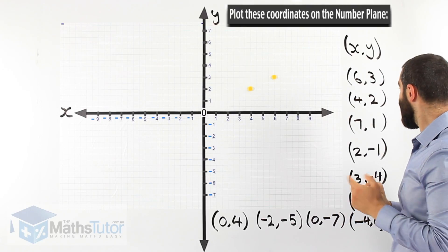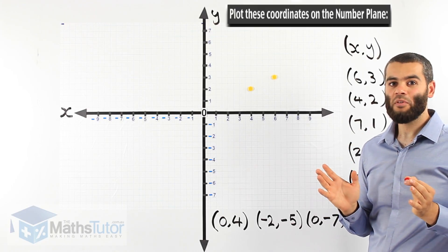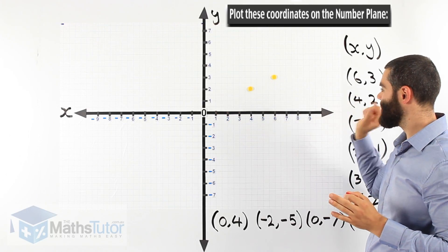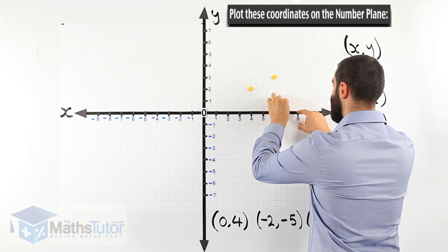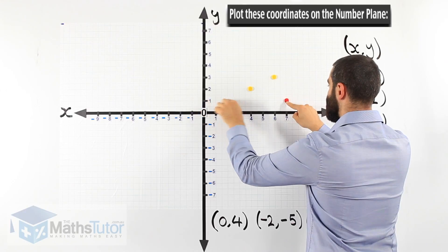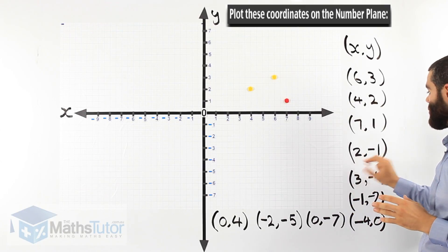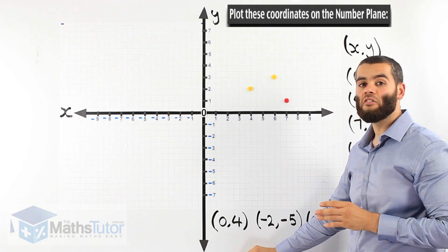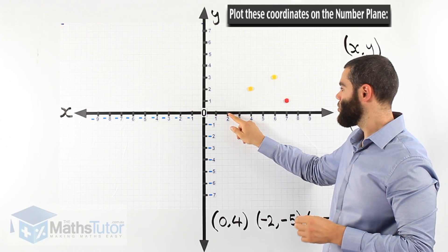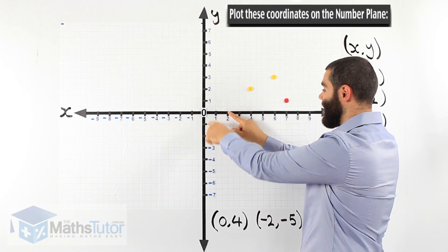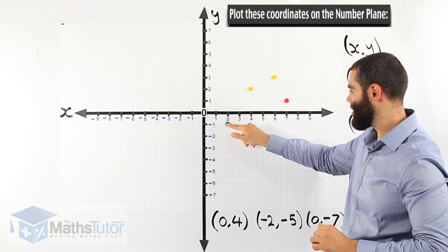Next point (7, 1): we start on the x-axis, find 7, then find 1 on the y-axis, and they meet right there. For (2, -1): 2 is on the x-axis, and minus 1 goes down on the y-axis, so the point meets right there at (2, -1).